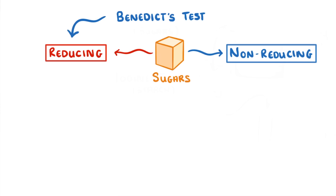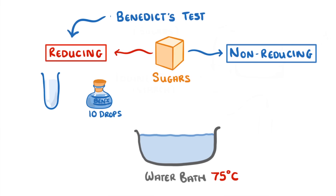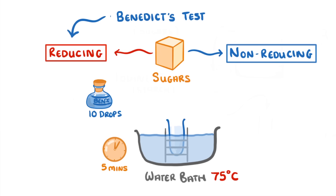To do the Benedict's test, first prepare your food sample and transfer five centimeters cubed of that sample to a test tube. Prepare a water bath set to 75 degrees Celsius, then add about 10 drops of Benedict's solution to your test tube and place it in the water bath for five minutes. For safety, use a test tube holder and point the tube away from yourself and others.